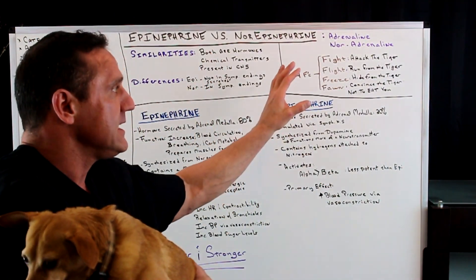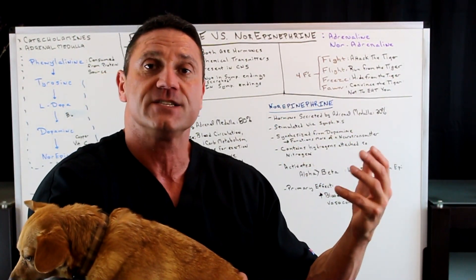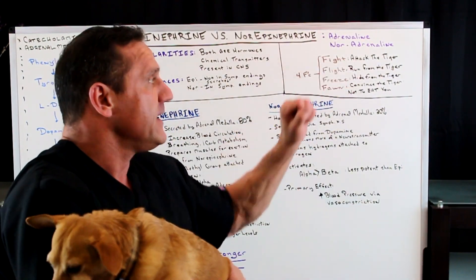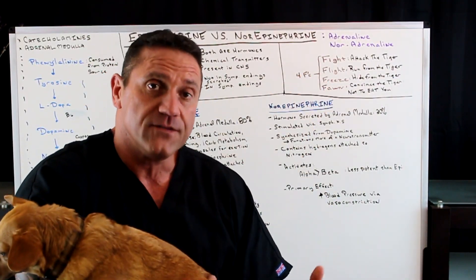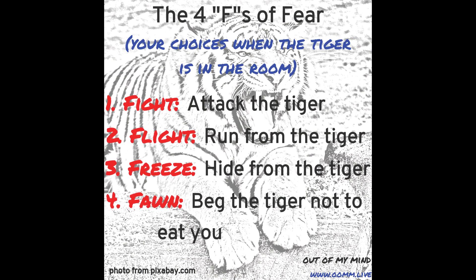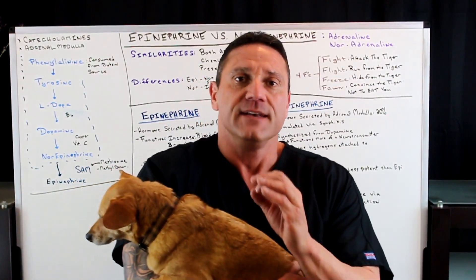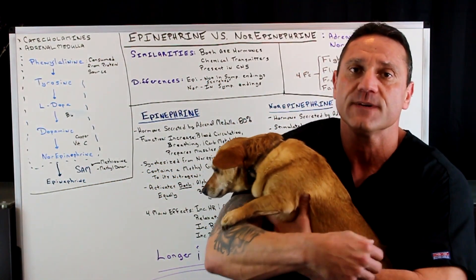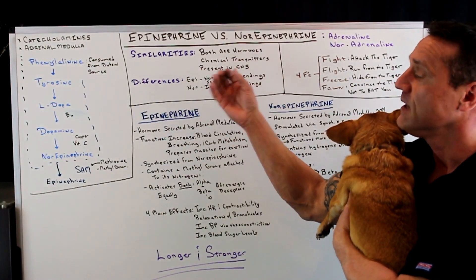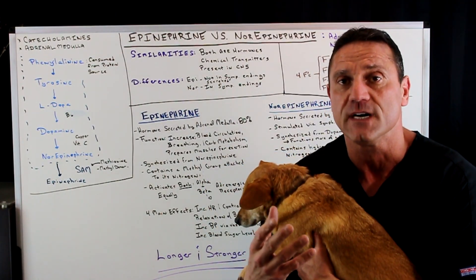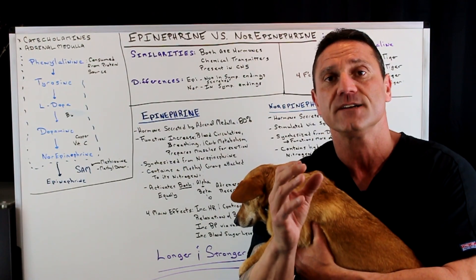The adrenal medulla releases adrenaline or noradrenaline, which drives your fight, flight, freeze, or fawn response — meaning: are you going to attack the tiger, run from the tiger, hide from the tiger, or try to convince the tiger not to eat you? The similarities between noradrenaline and adrenaline: they're both hormones released from the adrenal medulla, and they're both chemical transmitters present in your central nervous system.